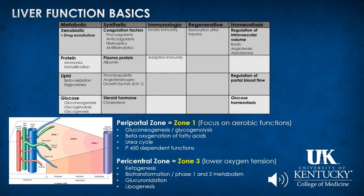Moving closer to the central vein — the pericentral area — oxygen availability drops. Substrate is still present but oxygen decreases, so ketogenesis, biotransformation including glucuronidation, and lipogenesis are located in zone three. Zone two is therefore the in-between zone, and the functions located there depend on how much oxygen is consumed in zone one versus what is still available.